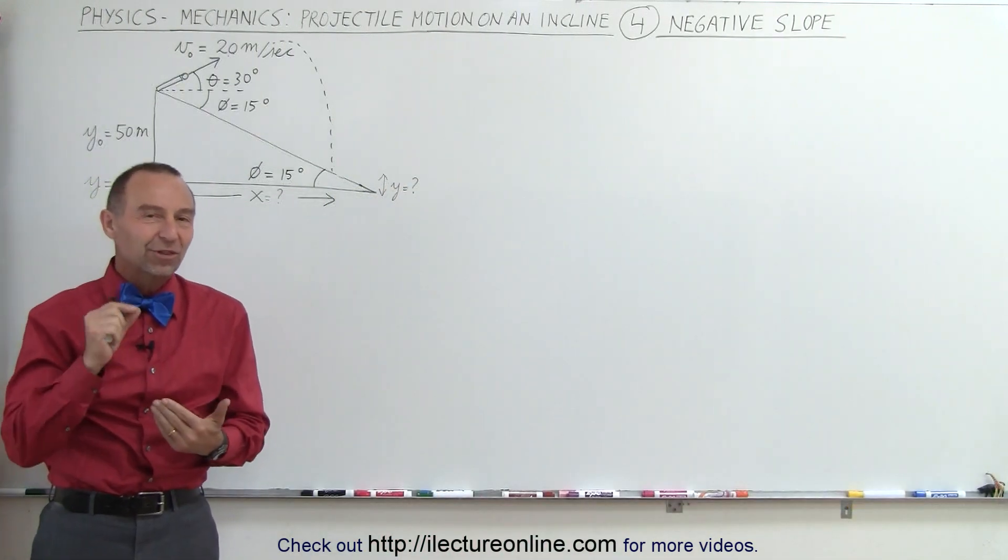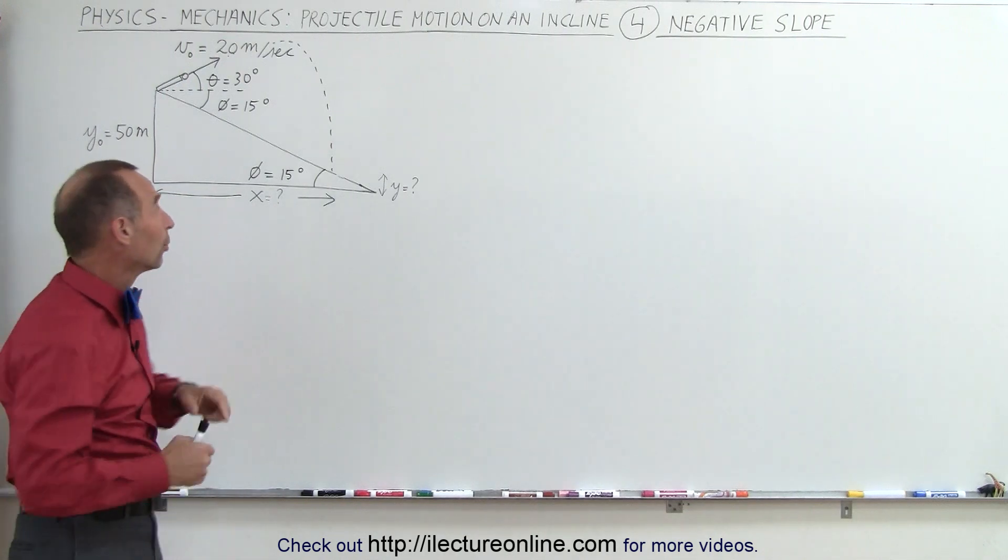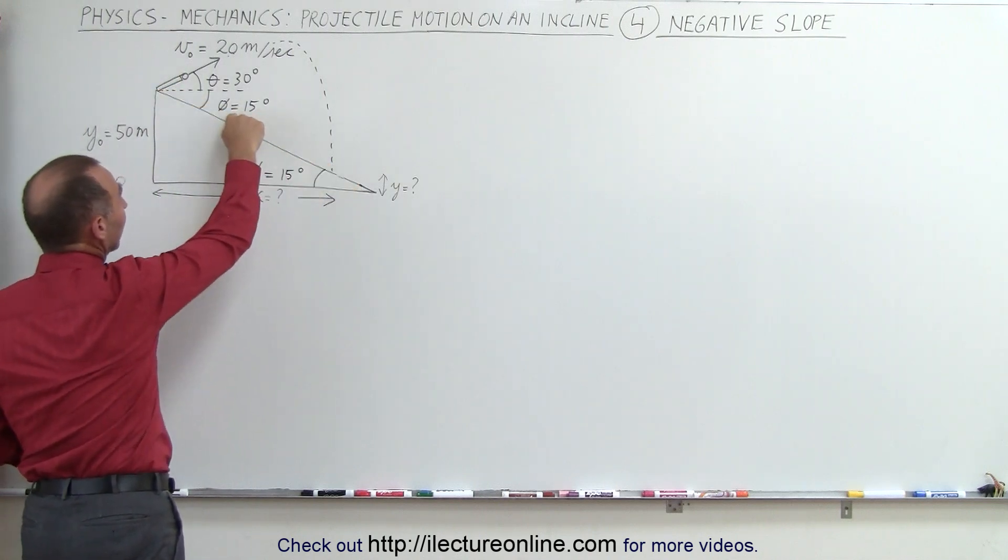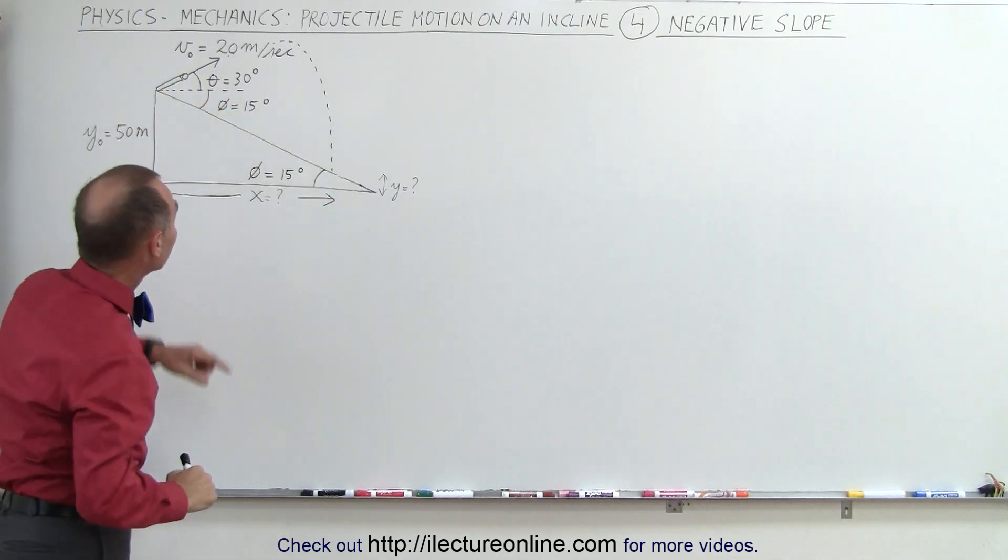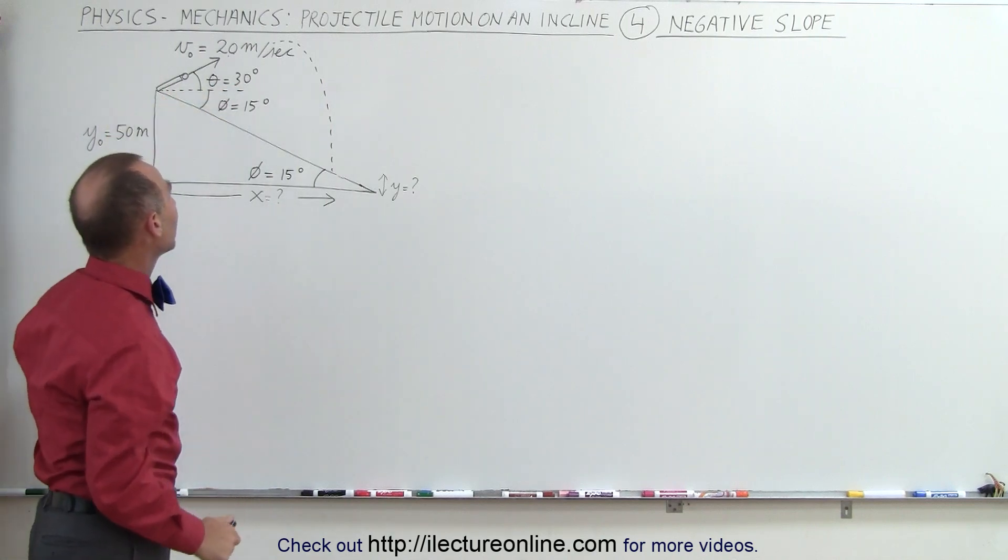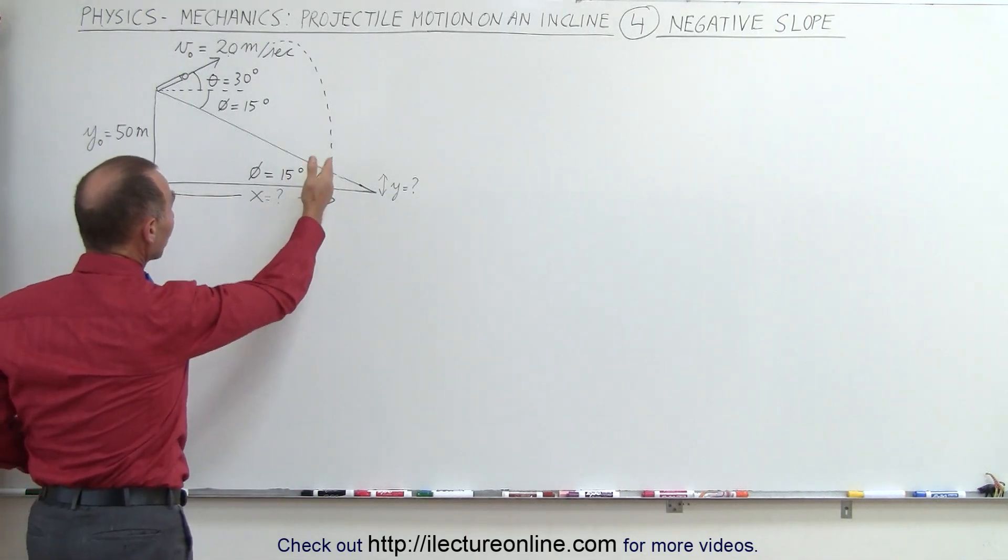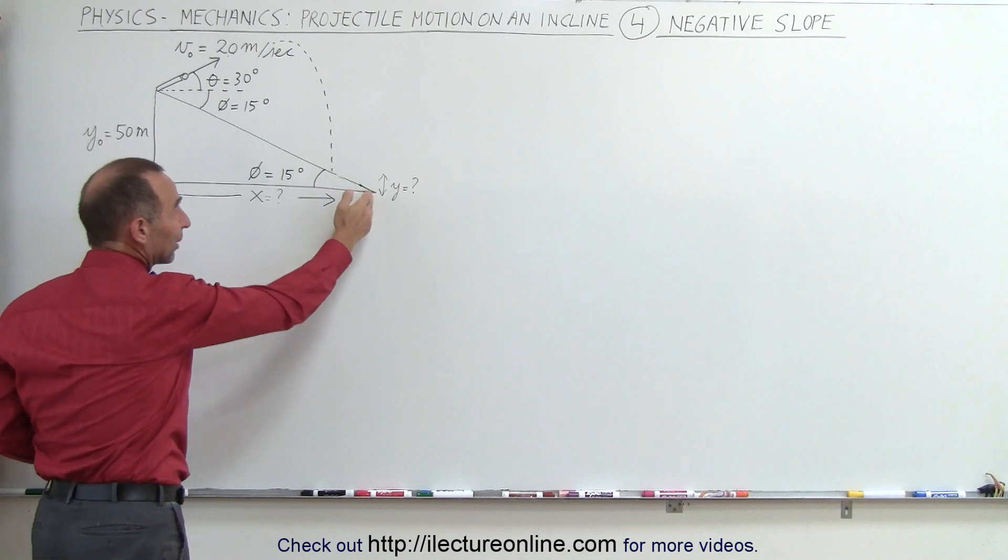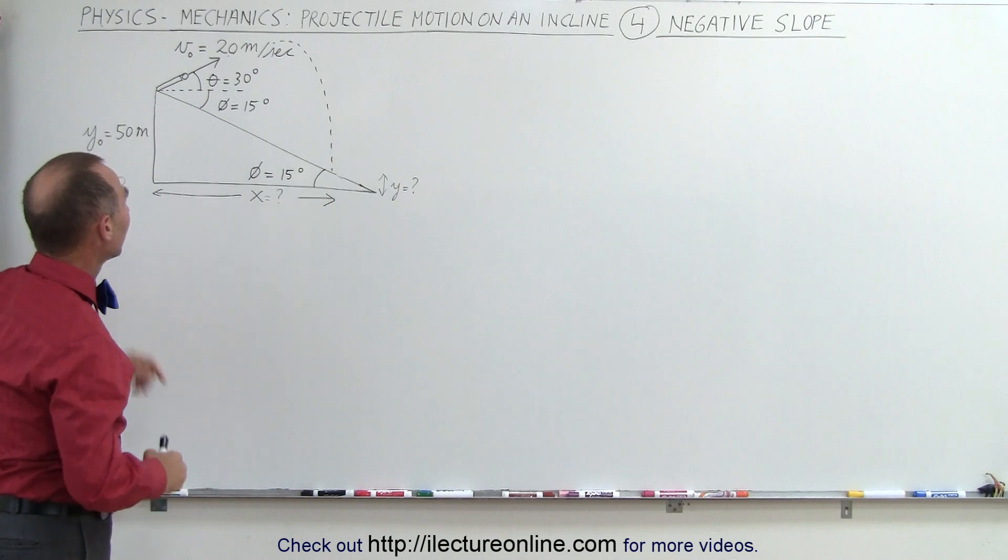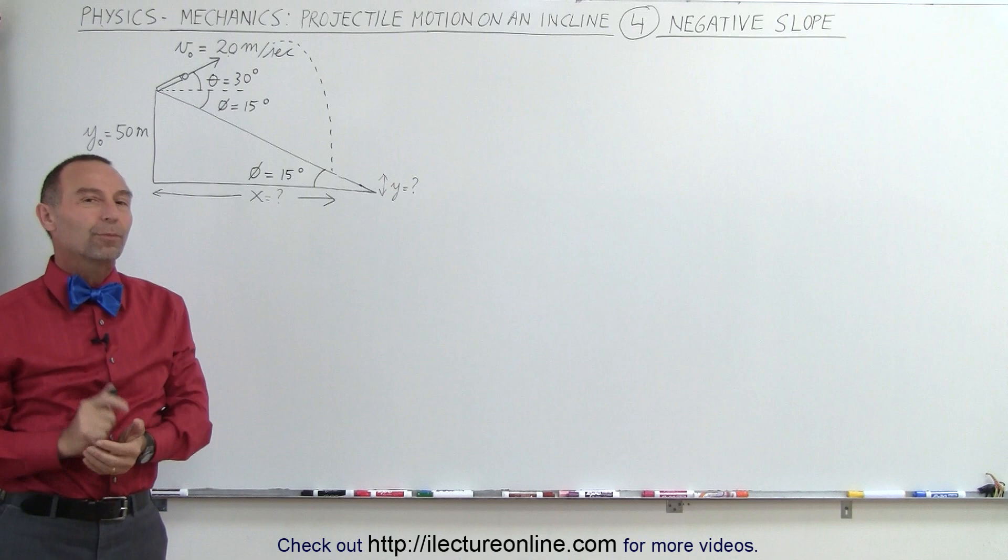Now let's do a problem where we fire a projectile with an inclined plane that has a downward slope. In other words, from where we fire it, the inclined plane is sloped downward at an angle of 15 degrees below the horizontal. The projectile is fired at an angle of 30 degrees above the horizontal with an initial velocity of 20 meters per second. The question is where on the incline will it land, presumably before we get to the very bottom of the incline. Notice that the height here is 50 meters. The angle here is 15 degrees. So let's go ahead and see how we would approach a problem like that.